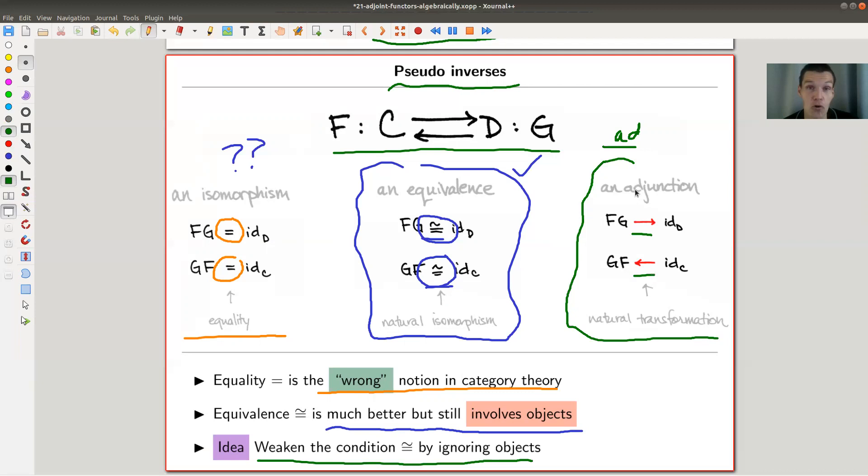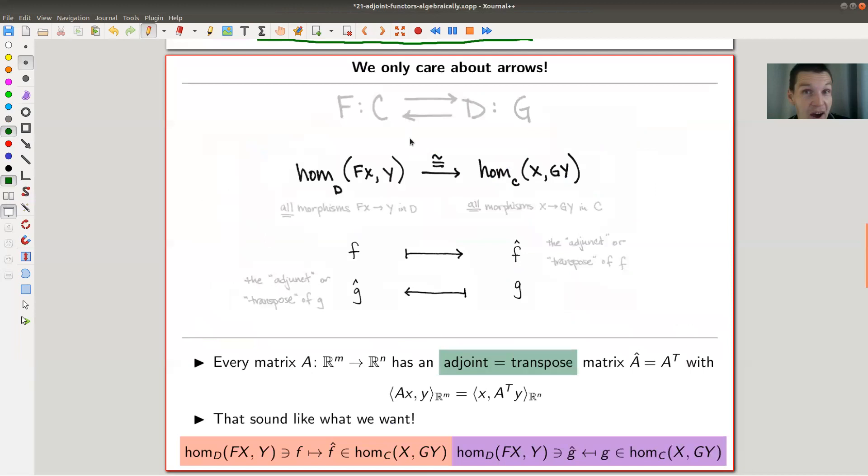It generalizes the idea of having an inverse, right? So the left adjoint, the right adjoint, that's what we will see, is like a left inverse and the right inverse. It's kind of just generalization. And then, of course, inverses are included in the picture, they come for free.